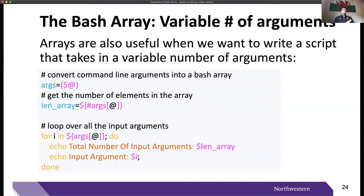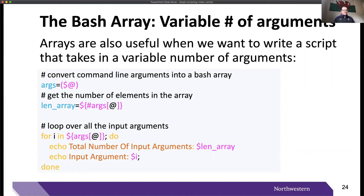We can leverage this same logic when passing a variable number of arguments at the command line to your program. You can declare a variable that is an array, where each element is argument one, argument two, argument three, and so on through however many arguments you passed to your program. You can also get the length of the array using the syntax shown on screen, which is useful if you want to allow a variable number of arguments but cap it — for example, allowing four to eight arguments but not more than eight.